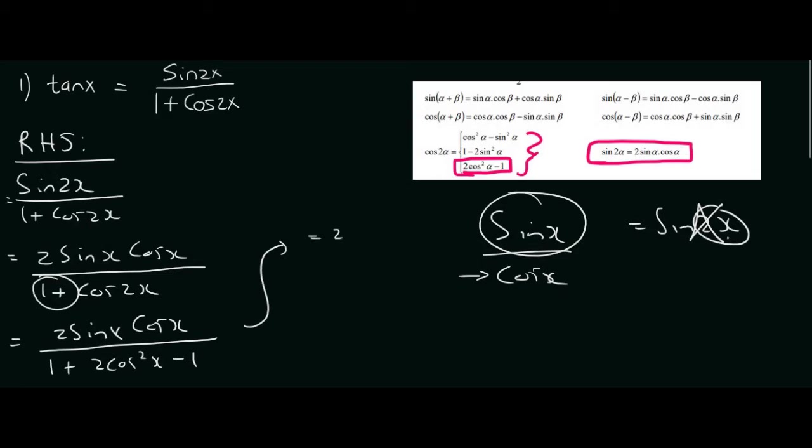I'm just gonna give us 2 sin x cos x at the top. At the bottom the 1's would cancel and you're just left with 2 cos squared x. So these 2's can cancel.